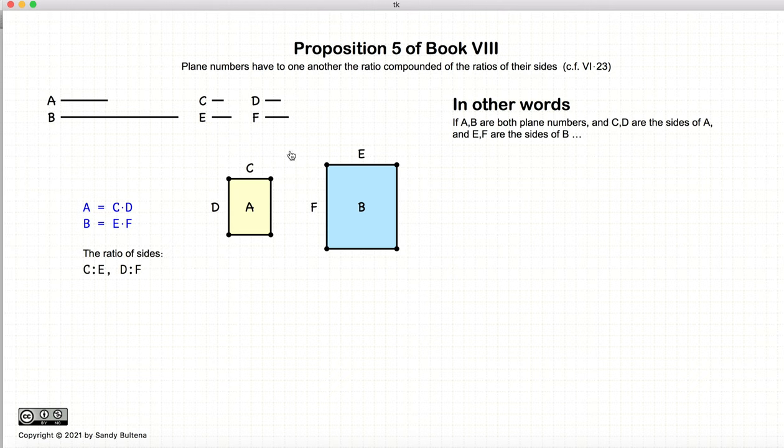Now, the ratio of the sides will be C to E and D to F. So, this proposition states that if we have two plane numbers, that A and B will be the compound ratio of the ratio of the sides. Now, the compound ratio of C and E and D and F will be the ratio of C multiplied by D to E multiplied by F. So, that is what this proposition sets about to demonstrate.